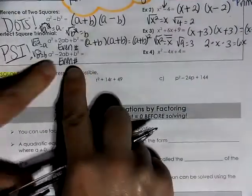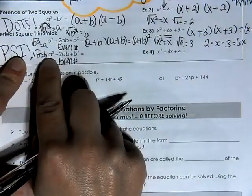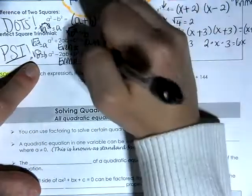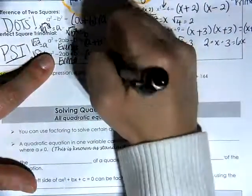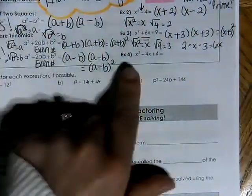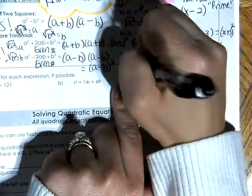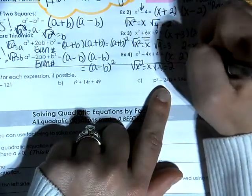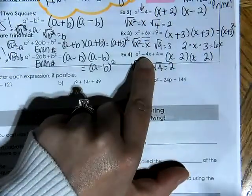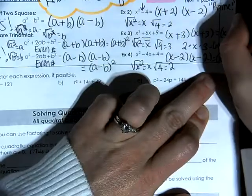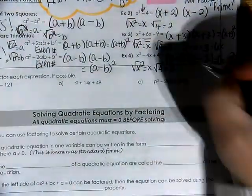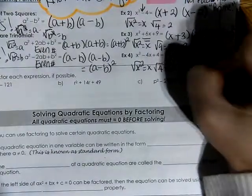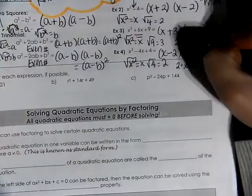You can also rewrite this as x plus 3 squared. For example number 4, same idea — the first term is a perfect square, the last term is a perfect square. I have an x and x in the first position, a 2 and 2 in the last position, but because my middle term is a minus, I have minus signs in between. This is equivalent to a minus b squared. The square root of x squared is x, the square root of 4 is 2, so that's x minus 2 squared. Verify: 2 times x times 2 is 4x — there's the middle term.